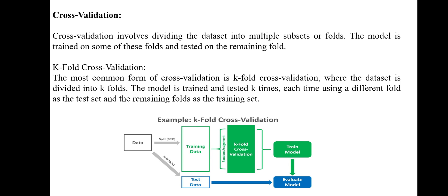Looking at the k-fold cross-validation picture: we split the data — 80% into training data and 20% into testing data. After splitting, we perform k-fold cross-validation, checking each portion of data. If it is wrong, it goes back to the train model; if correct, the evaluate model gives the output directly.